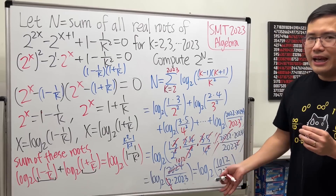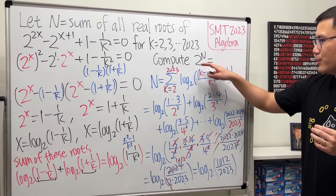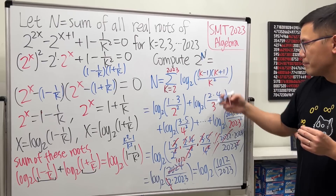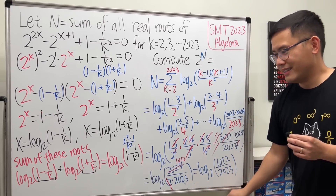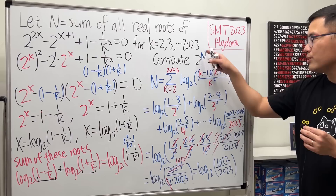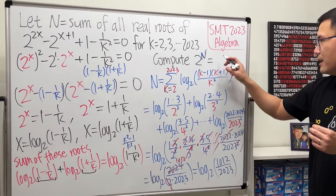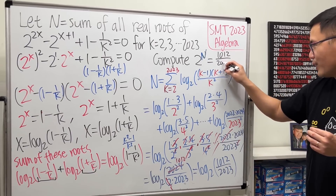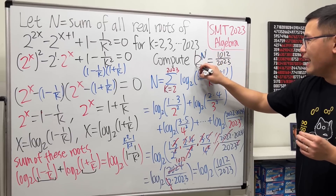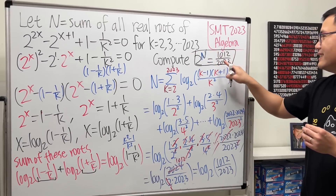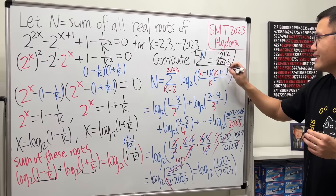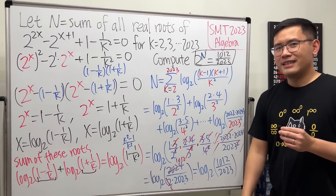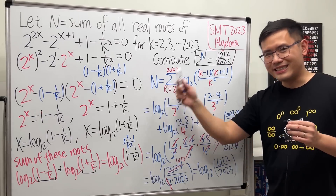This is N. At the end, we compute 2 to the Nth power. Since N is log base 2 of something, 2 raised to that log base 2 is just the inside. So the answer is 1012 over 2023. And I fit everything on this board — amazing!